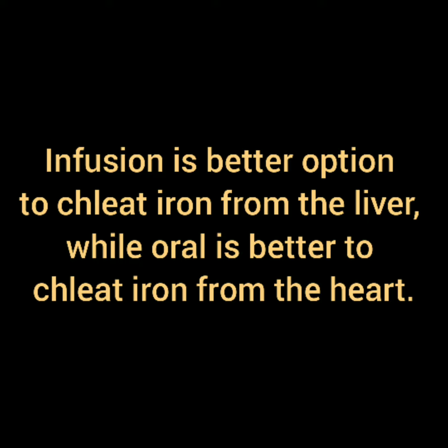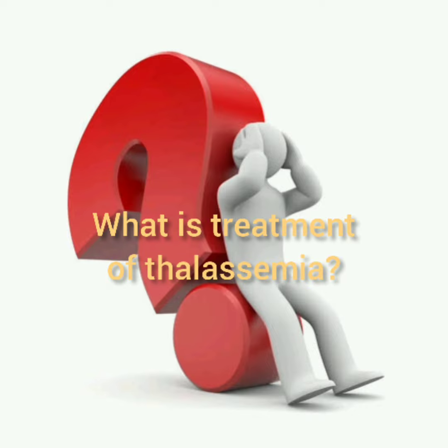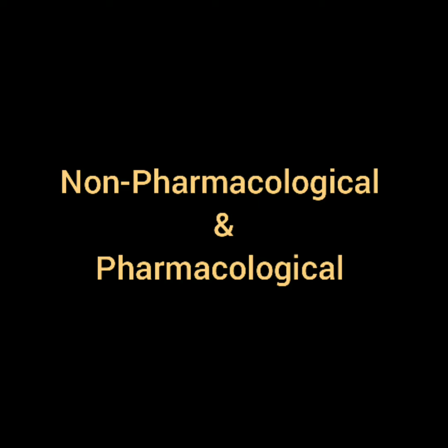If the patient has secondary hemochromatosis but has not yet developed any complications related to the heart or liver, then both can be given simultaneously to prevent toxicity and complications related to iron overload. The next and most important question could be: what is the treatment of thalassemia?